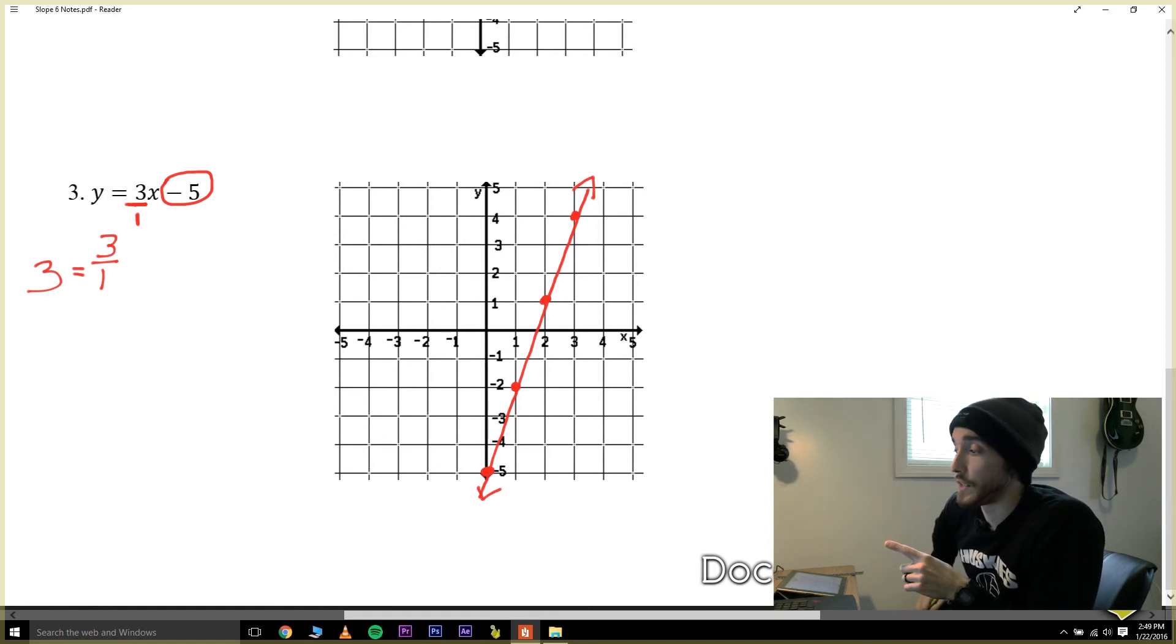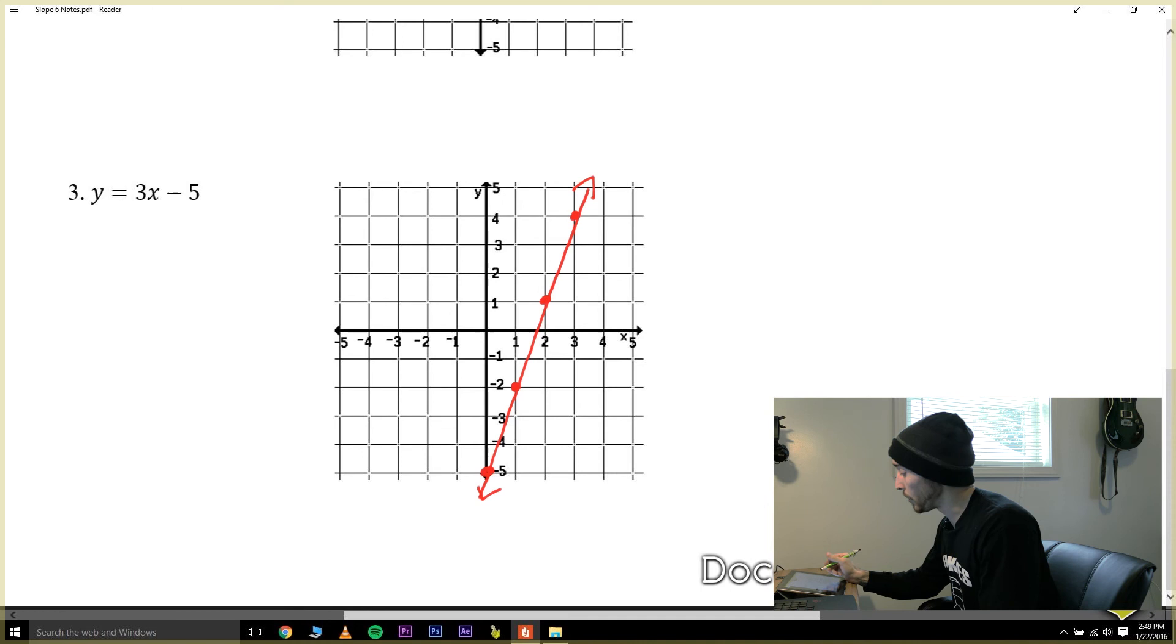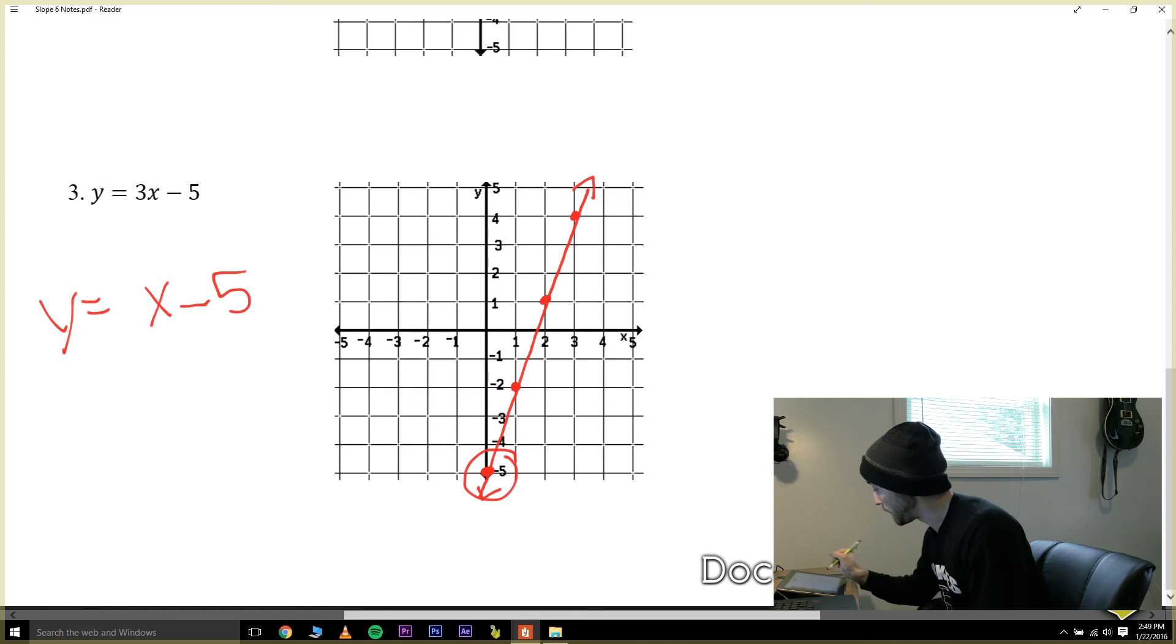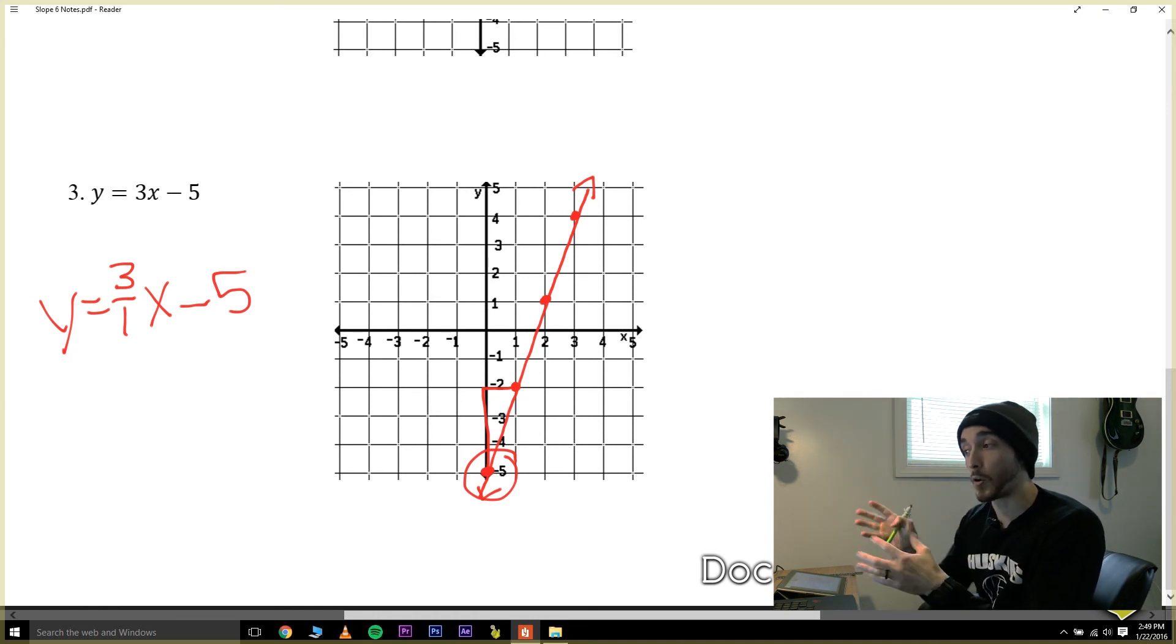Just one last thing before we finish is you can always think about this in reverse. For instance if they didn't give us an equation but they did show us this graph, you can always work backwards and say okay well where would it cross the y-axis? Well it would cross right here at negative five so I know it's like y equals something times x minus five. And then what's the slope of the line? Well you can count rise over run, so a rise of three and a run of one. So once you know how slope intercept form works you can either graph it based on an equation or you can take a graph and write the equation that would match it.